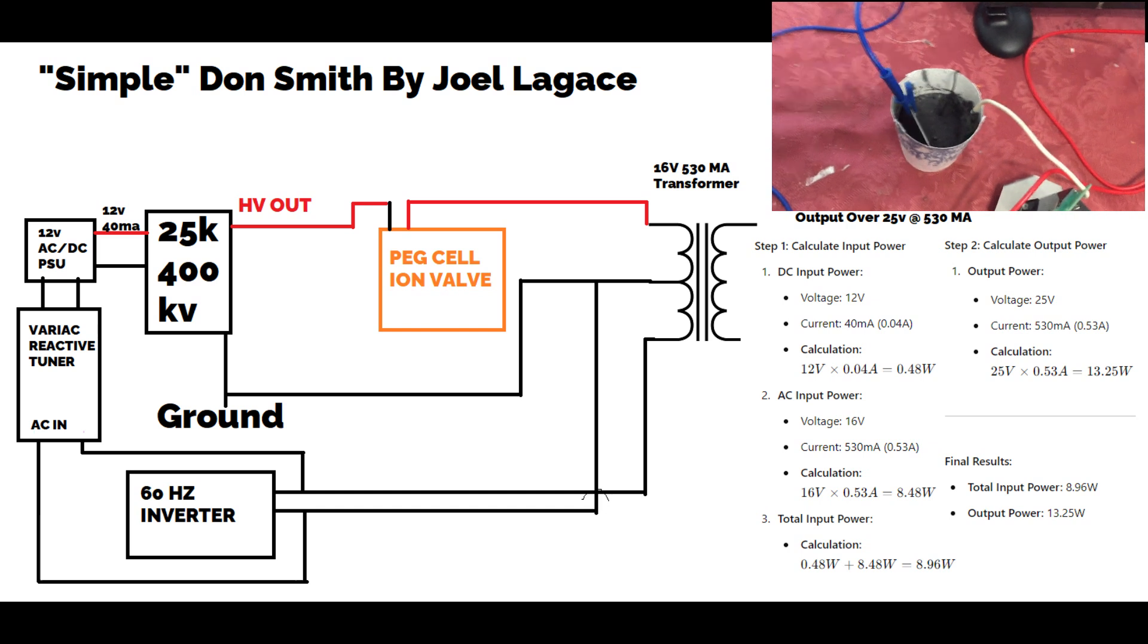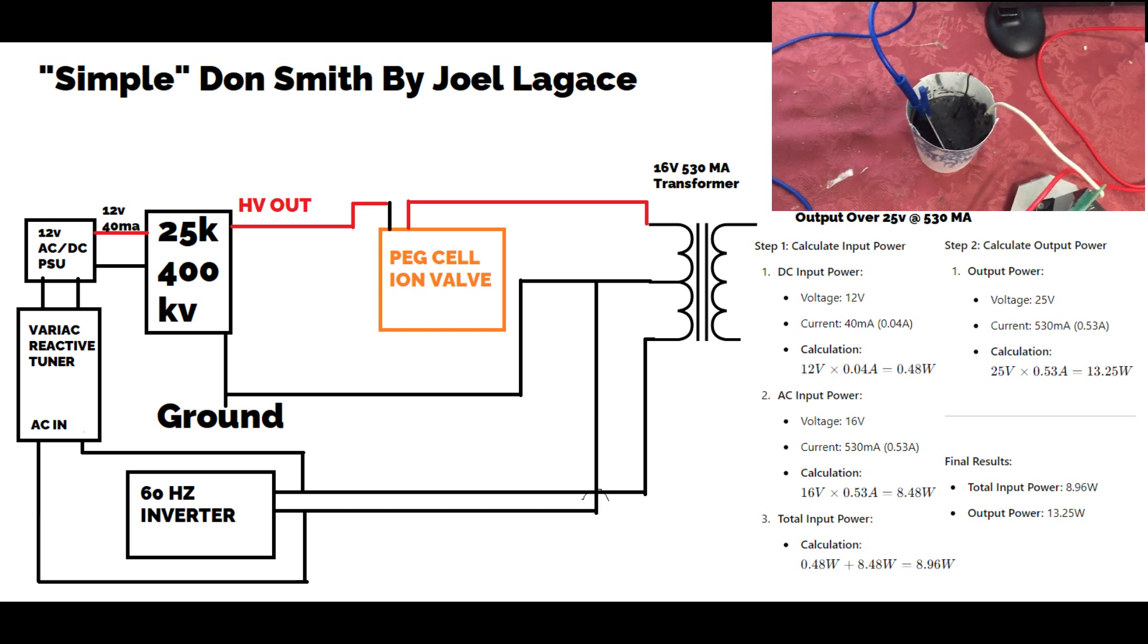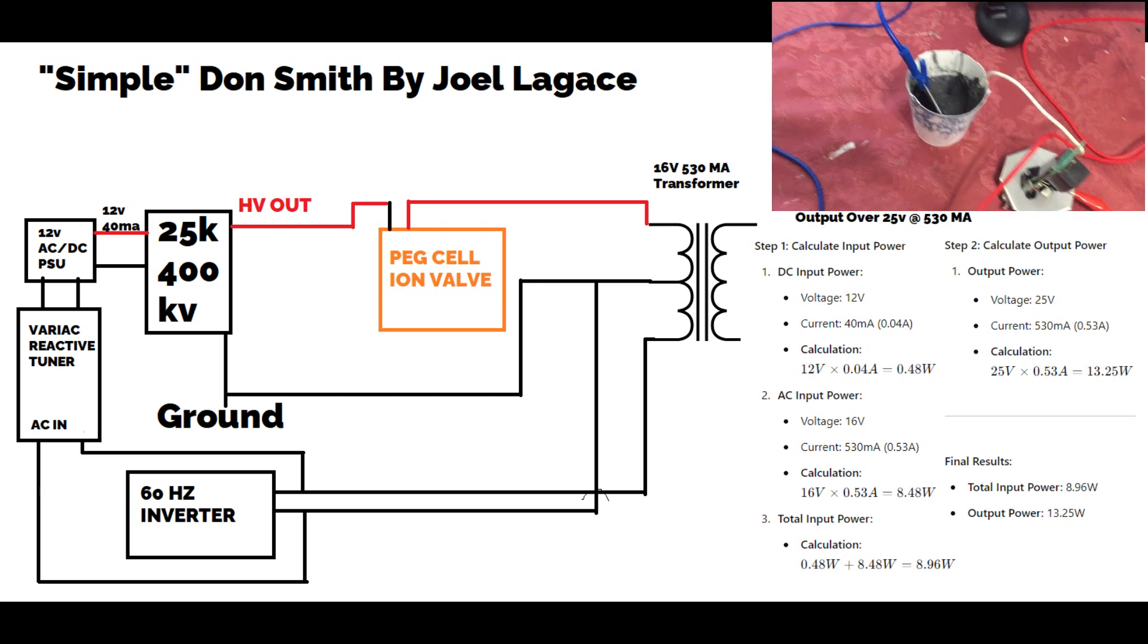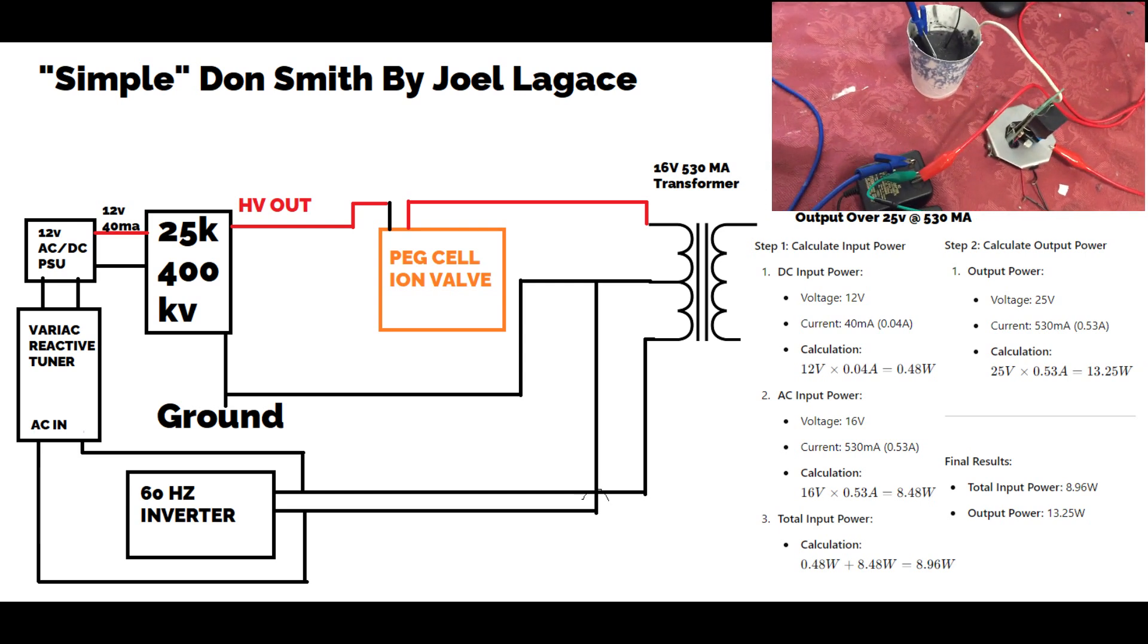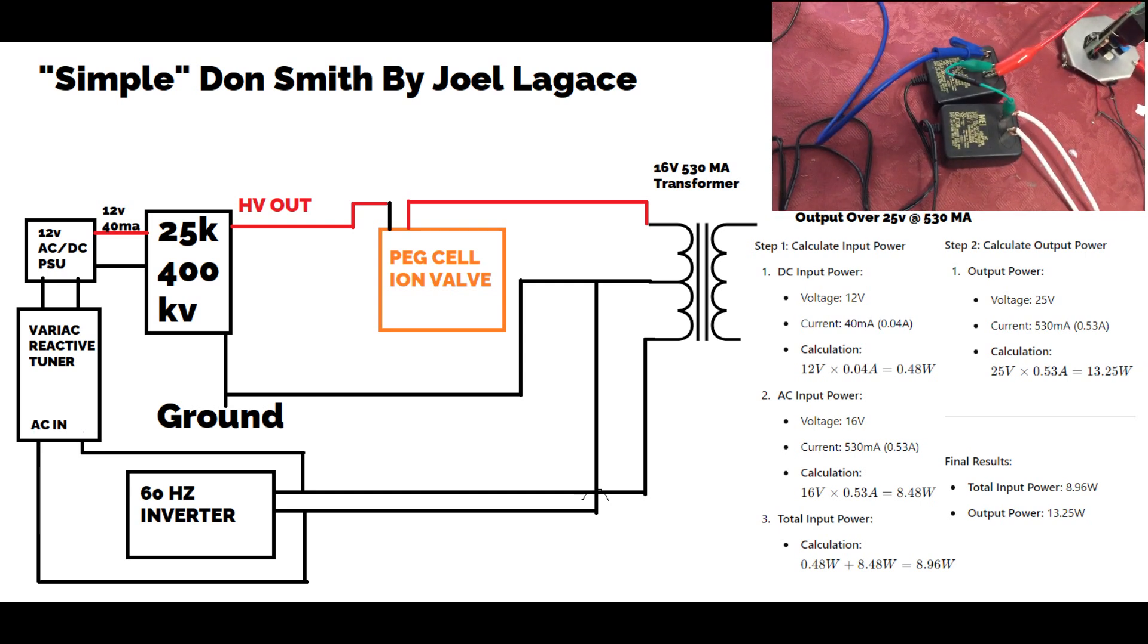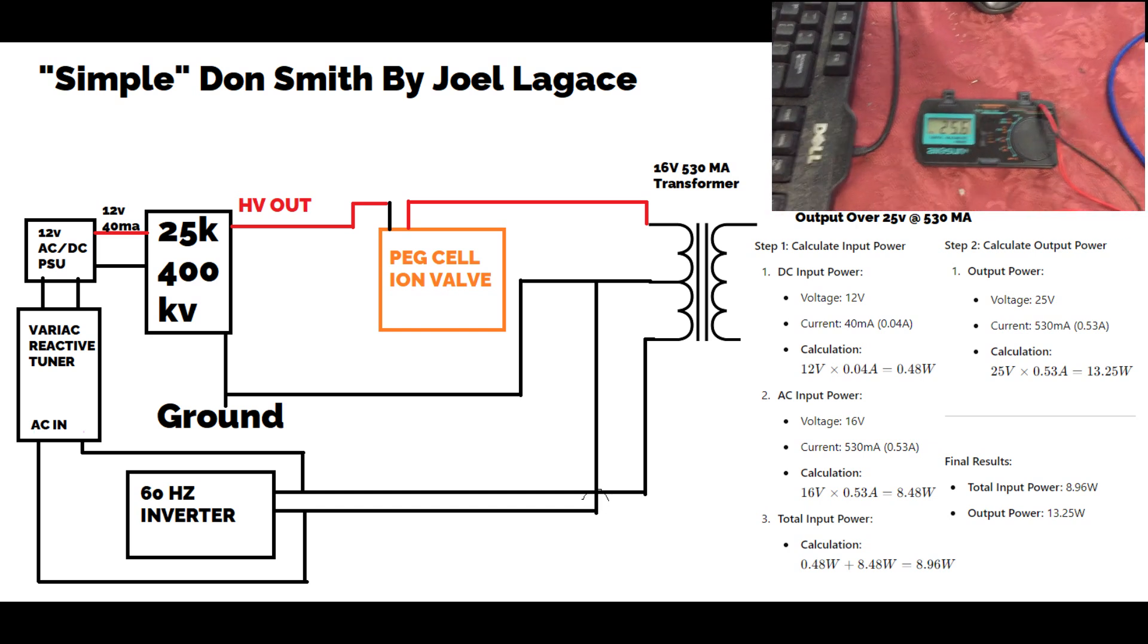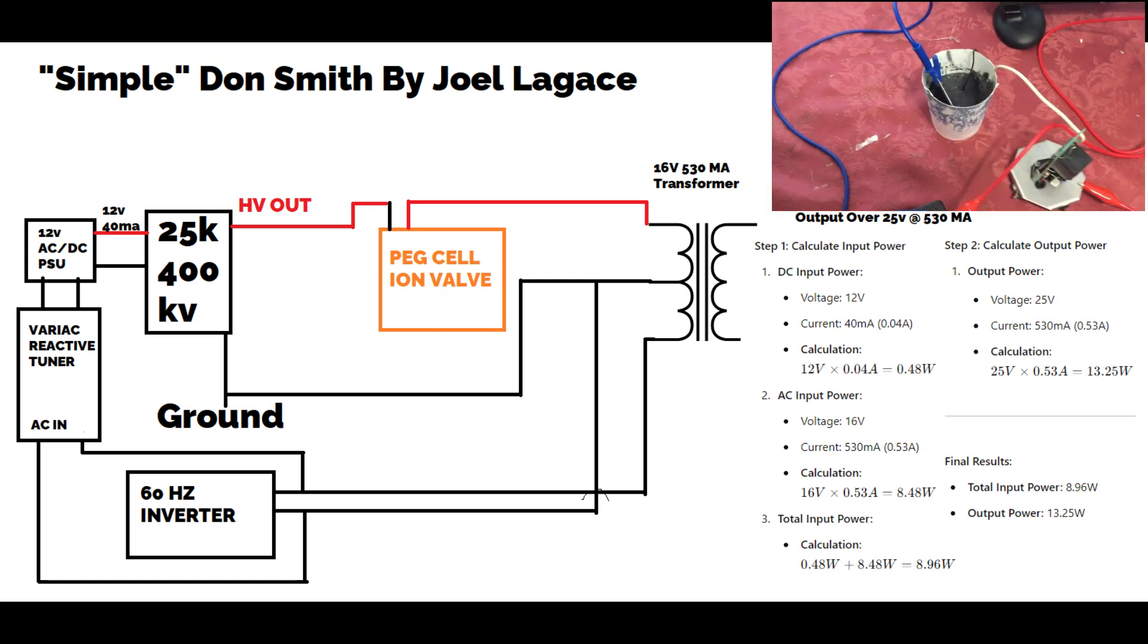A peg cell to me is a lot easier to build than an ion valve and it offers several features and enhancements that the ion valve wouldn't give you on its own. So it just makes sense to run it that way and incorporate it and simplify the Don Smith concept and yes it really really works. So there you have it folks a gain in potential for very little input.